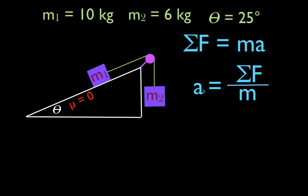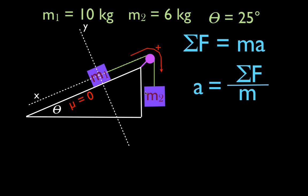To calculate the acceleration, we need the masses — we've been given 10 and 6 — and we need to sum up the forces. But first, I like to draw in the x-axis and y-axis for M1 on the inclined plane, and then choose the positive direction. I choose up the inclined plane as positive for M1, and then over the pulley and down as also positive for M2.